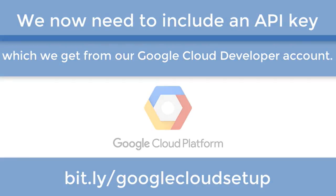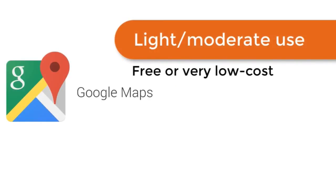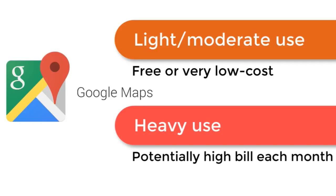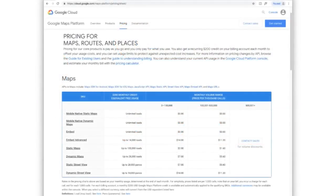The short version is that light use or moderate use of mapping is going to be either free or very low cost. However, if you have a large trucking company and everyone's using mapping continuously, then you might have a bill to pay from month to month. The pricing can vary depending on how much you use it. For most people they're probably not going to run up a bill, but for those using it very heavily — say, people making deliveries and mapping out routes — you're probably going to end up paying something to Google depending on how many times per day or per month. They have a really nice price calculator on their website that you can play around with to gauge how much it might cost you.